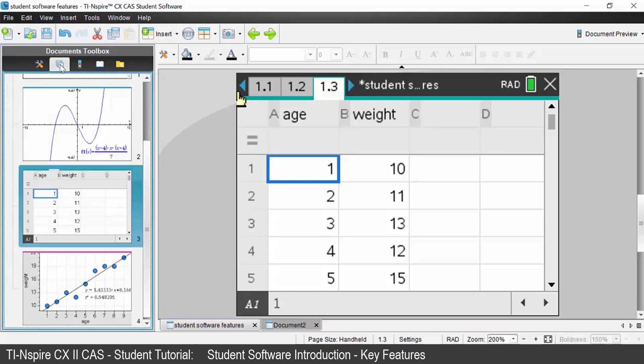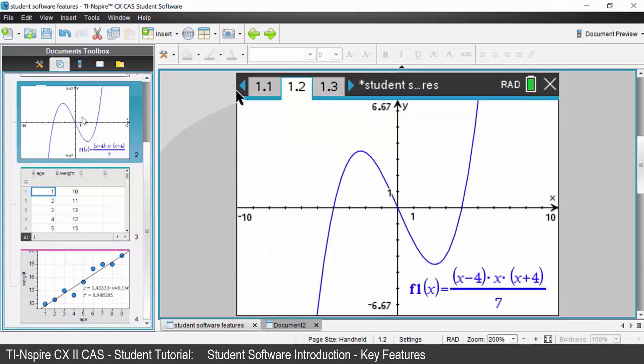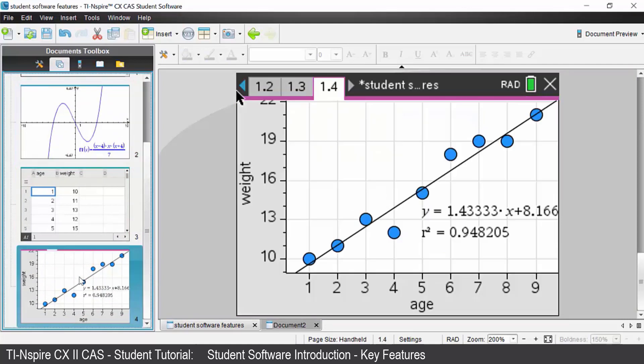The next icon is page sorter. That gives you a list of all of the different pages you have opened in your document and you can navigate to the different pages.